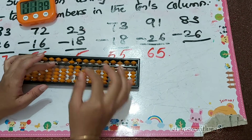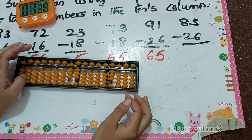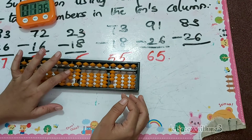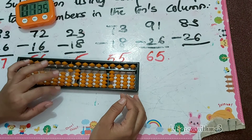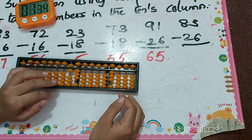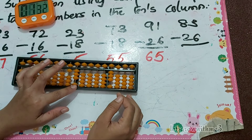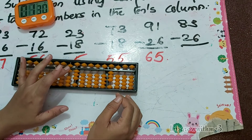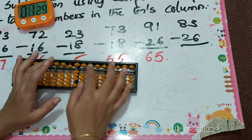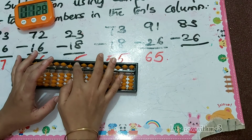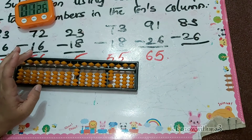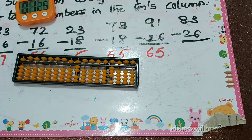83 minus 26. So minus 2 in the tens column, minus 6 in the ones column. How to do minus 6? Papa down, mama down, baby down. So the answer is 57.